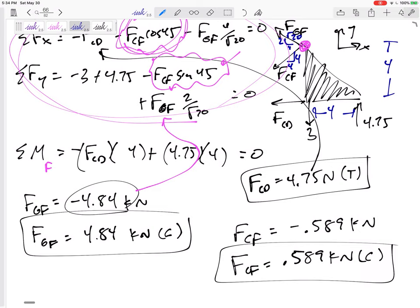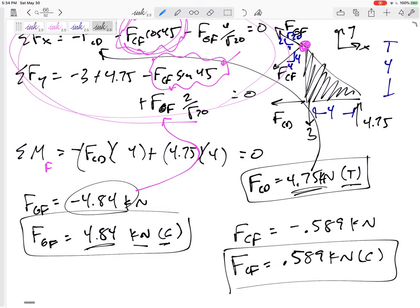All right. So one thing, don't tell me negative. I've talked about this. Don't tell me negative and compression, right? Tell me the magnitude is 0.589 and then tell me compression. Telling me negative and compression is kind of like a double negative. All right. So what I'm looking for, these three things boxed in: FCD is 4.75 kilonewtons in tension. FGF is 4.84 kilonewtons in compression. And then FCF is 0.589 kilonewtons in compression as well.